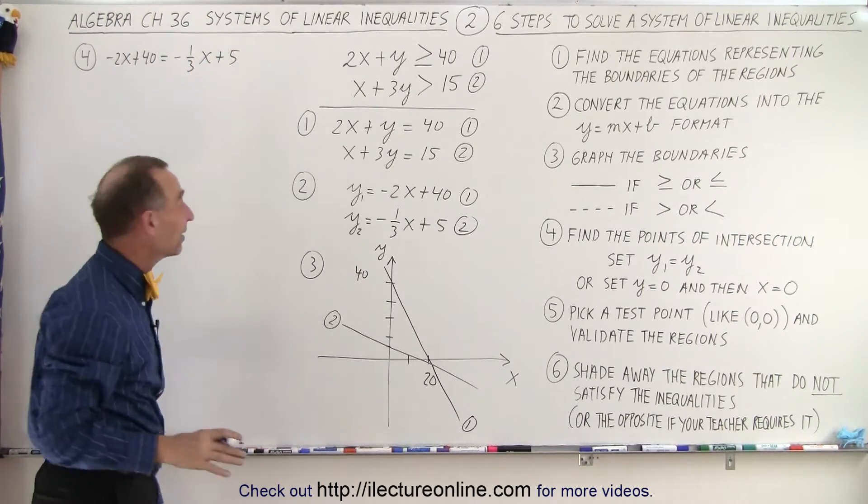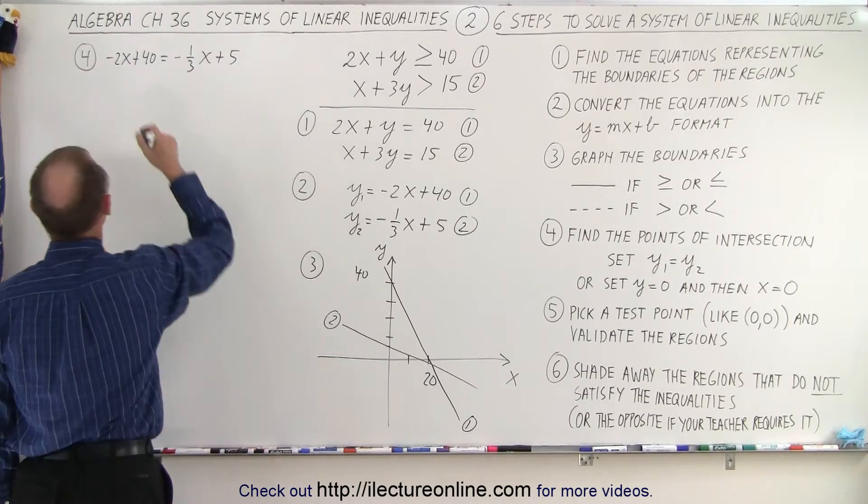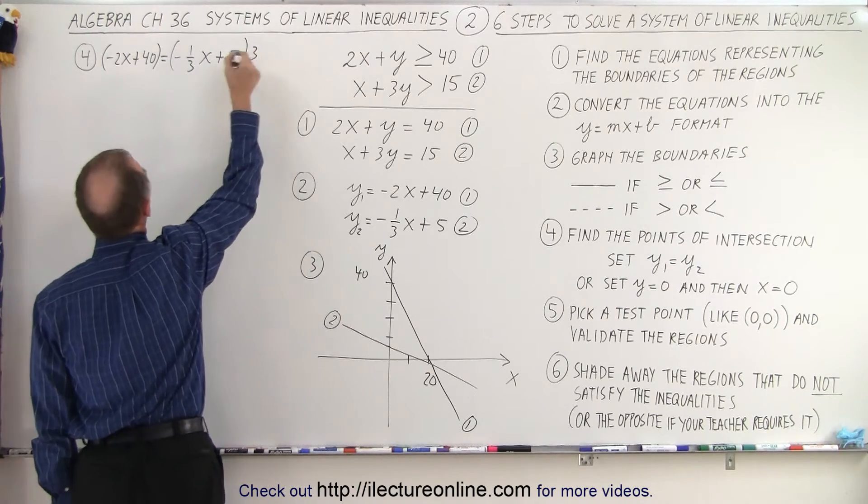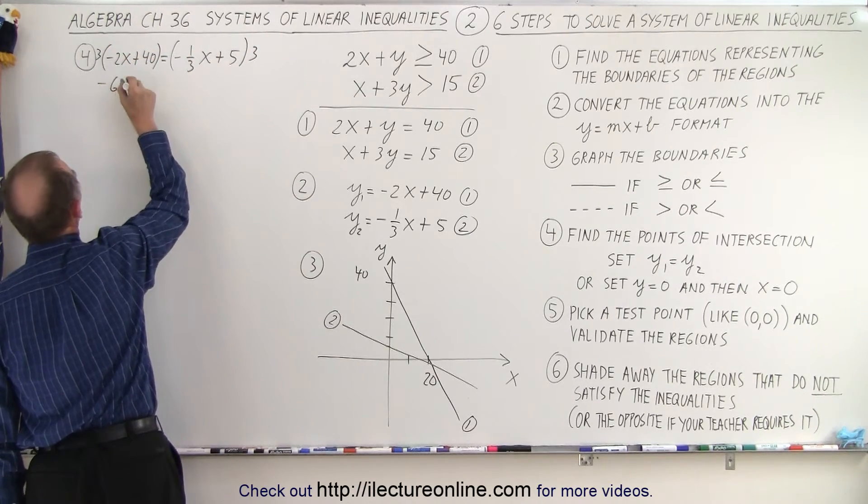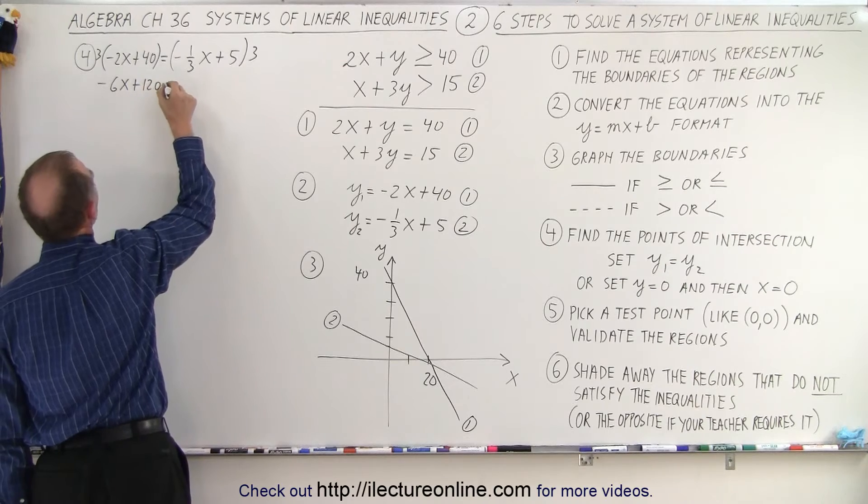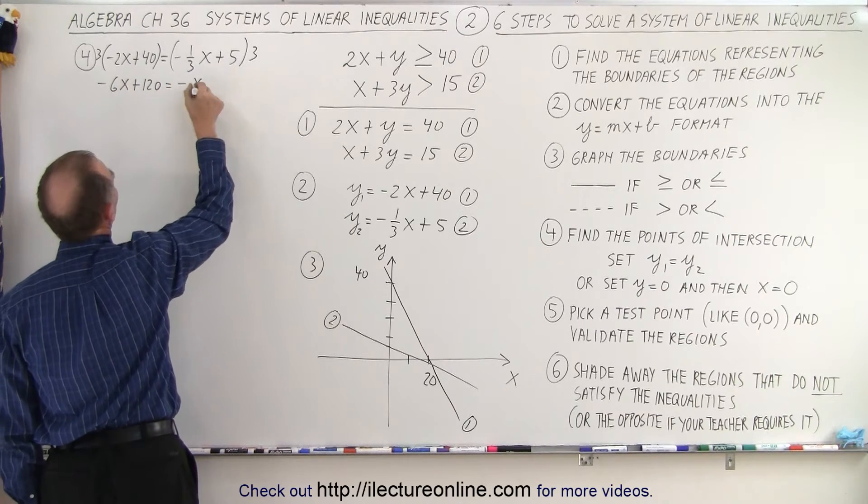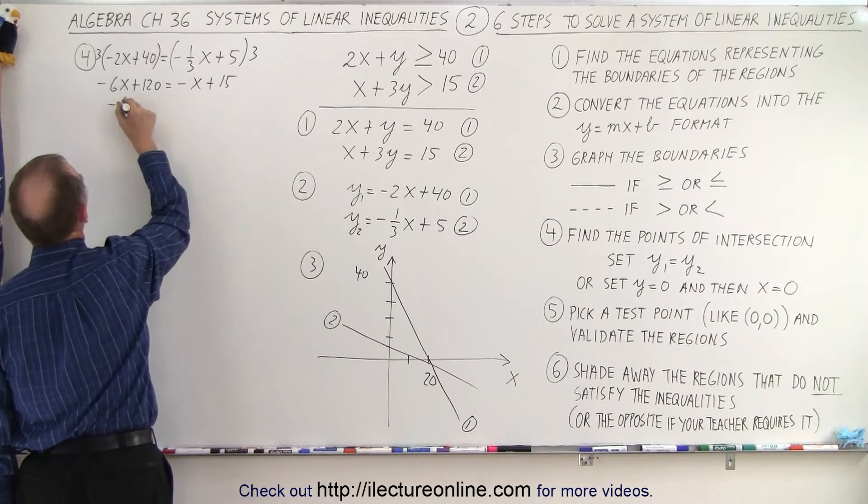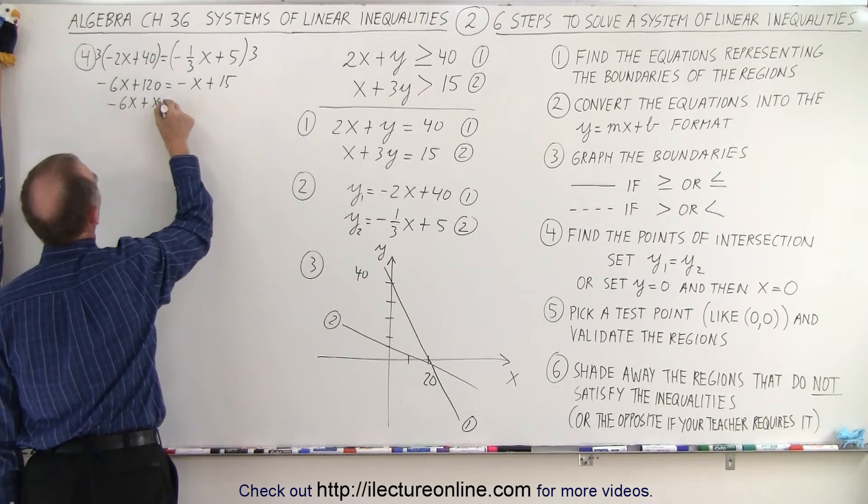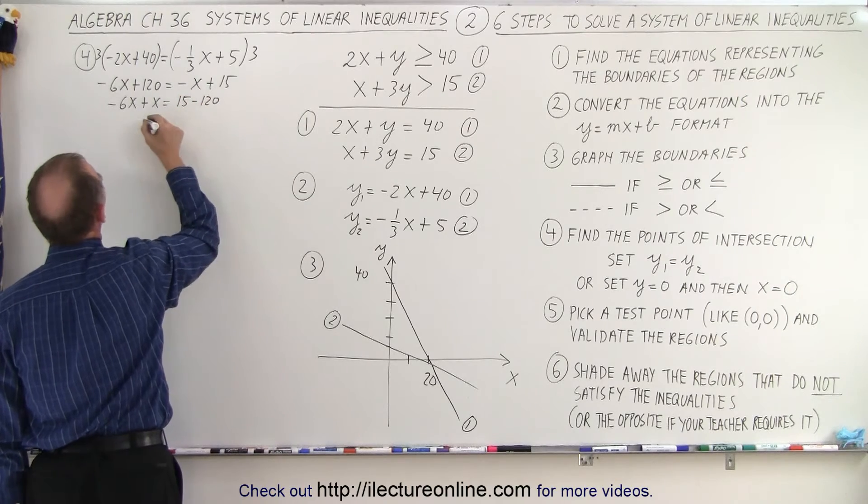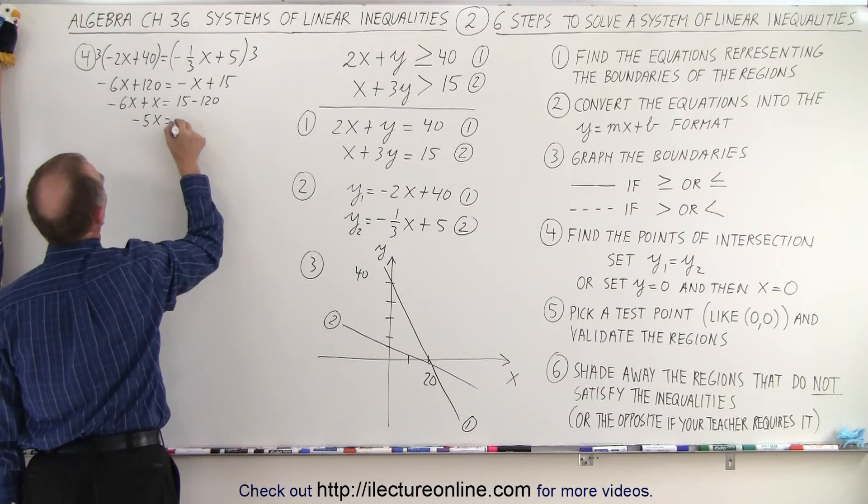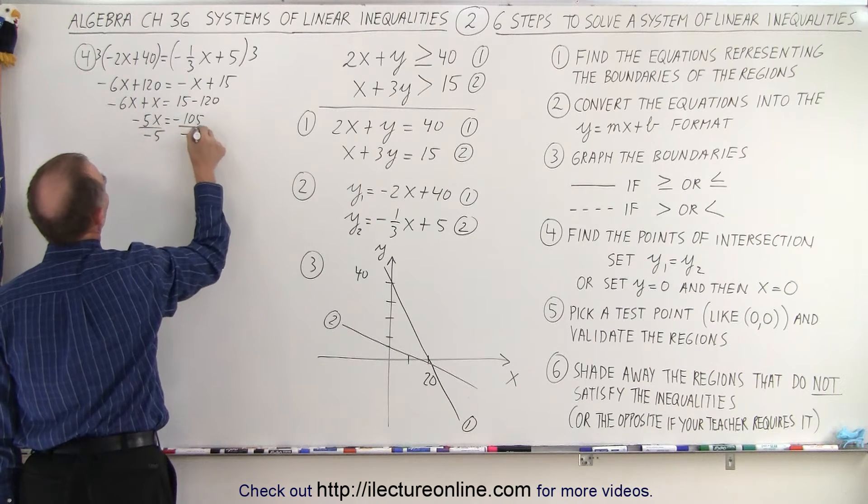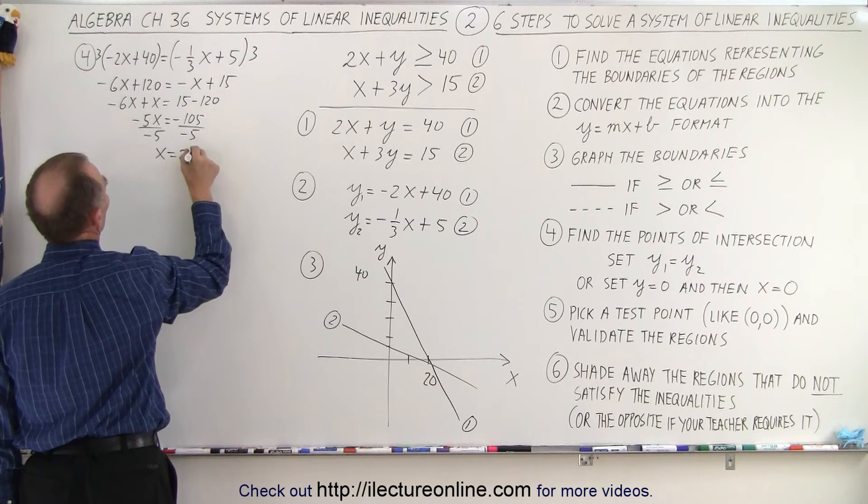Now, of course, to get rid of that fraction, we're going to multiply both sides of the equation by 3. Which means we get minus 6x plus 120 is equal to minus x plus 15. Move all the x's to one side. So we have minus 6x plus x is equal to 15 minus 120. Or minus 5x is equal to minus 105.